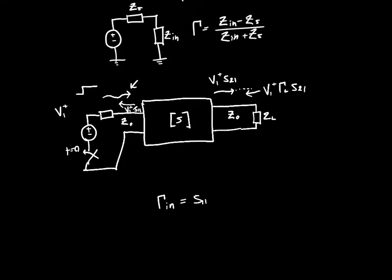So now we've got a wave that's just traveling back this direction. And I'm drawing it on the bottom just because there's more space there, not because it's actually propagating along on that wire. And at this point, part of the wave will get transmitted to the other side of the network with value. So the whole amplitude value at this point was V1 plus times gamma L times S21. And then it's going to get transmitted back to the other side, and we need to multiply it by S12.